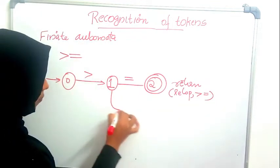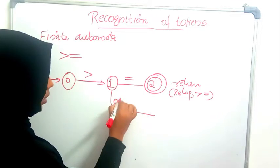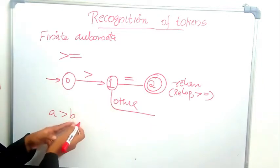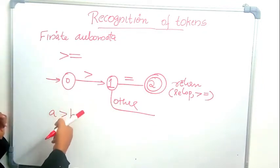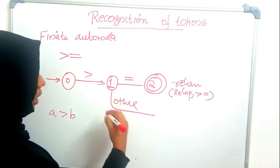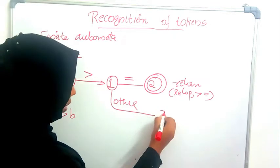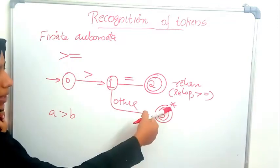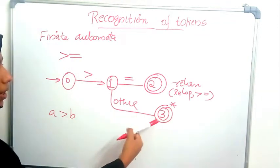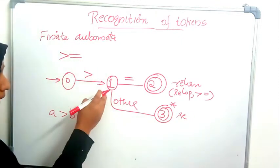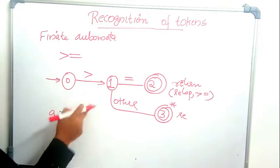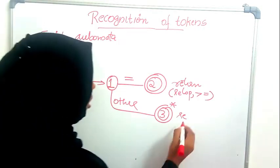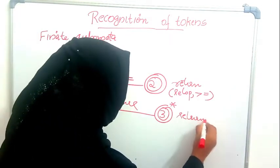If the next character is not equal-to — for example, if we have 'a greater than b', the next character will be 'b' — in this case we know that 'greater than' is the token. We reach a final state marked as a retract state, indicated by a star near that state. This means we have to move back to the previous character, since we read something other than equal-to, and we return relop comma 'greater than'.